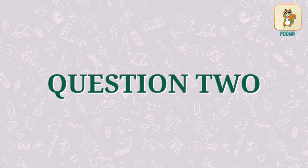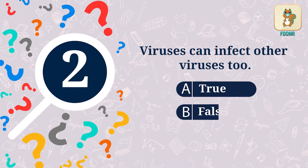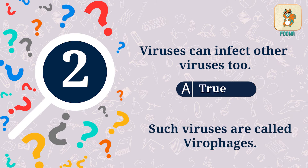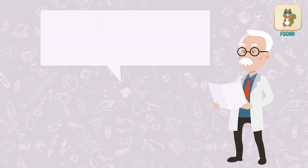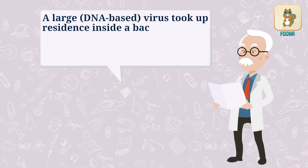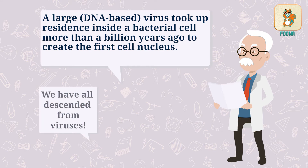Question 2. Viruses can infect other viruses too. Do you think this is true or false? This is in fact true, and such viruses are called virophages. Here is an interesting fact: scientists suggest that a large virus took up residence inside a bacterial cell more than a billion years ago to create the first cell nucleus. If so, this means we have all descended from viruses.